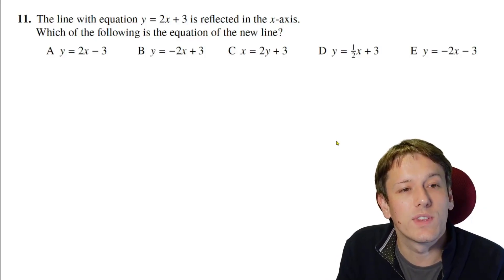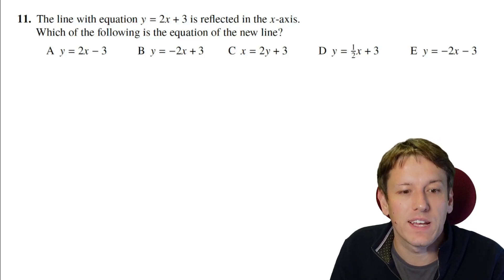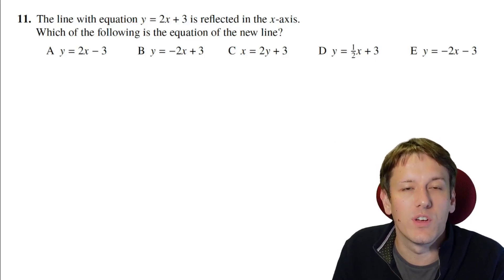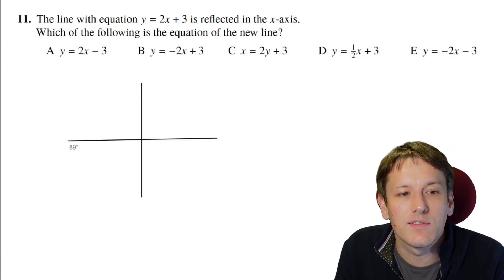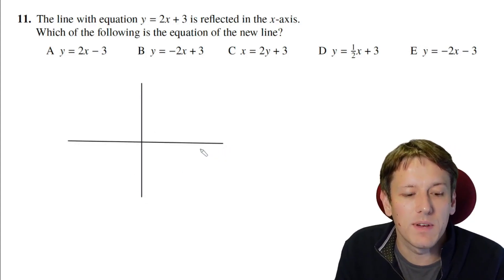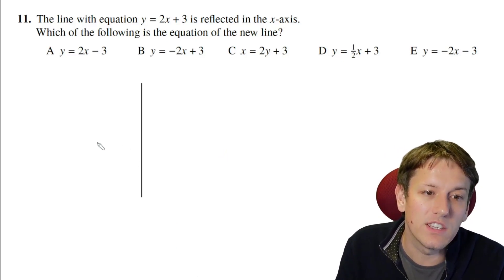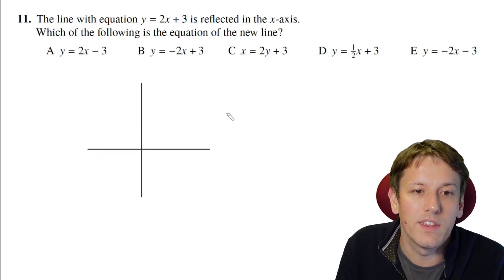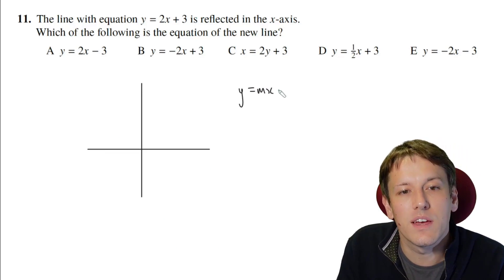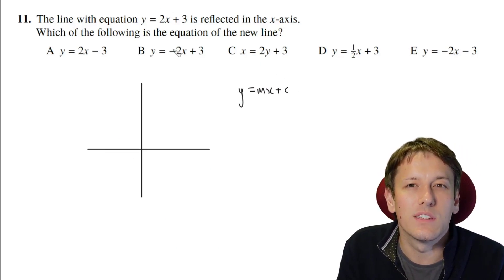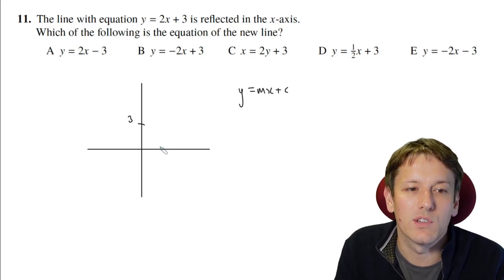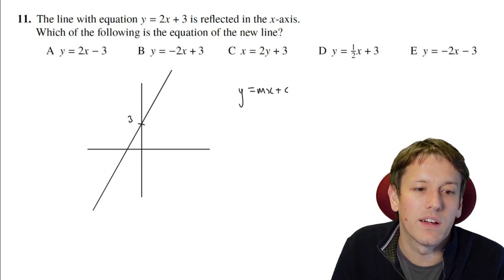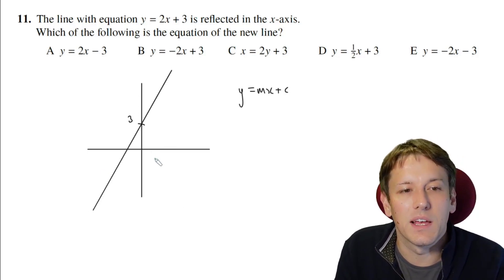Question 11, we've got the line with equation y equals 2x plus 3, that's reflected in the x-axis and we want to know what the new line's equation is. So we just do a rough sketch here, you don't have rulers and things in the Maths Challenge papers, but it only needs to be a very rough sketch of this line. If you know the form of the equation y equals mx plus c, you'll know that this is a line that has c is the y-intercept, so that would be 3, and it's going to have a gradient of 2. So every time it goes along 1 it's going to go up 2, and the line is going to look something a bit like that.